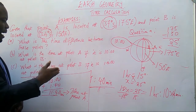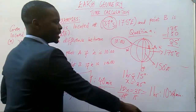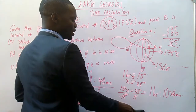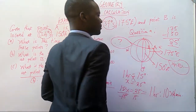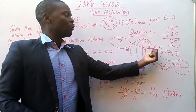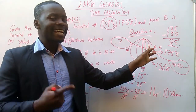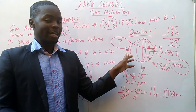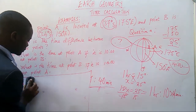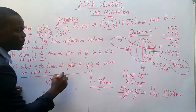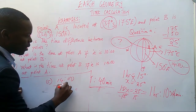The last question is saying: what is the time at point B if it is 14 hours at point A? We need to find the time at point B if the time at point A is 14 hours. We know the time difference, and in the previous video I said when you are moving in the direction of east to west, you must subtract. So we are going to have 14 hours minus the time difference of 1 hour 40 minutes. You must be careful how to subtract here.